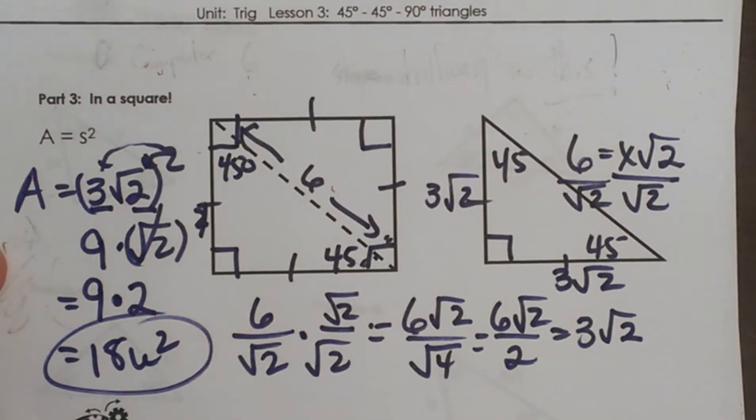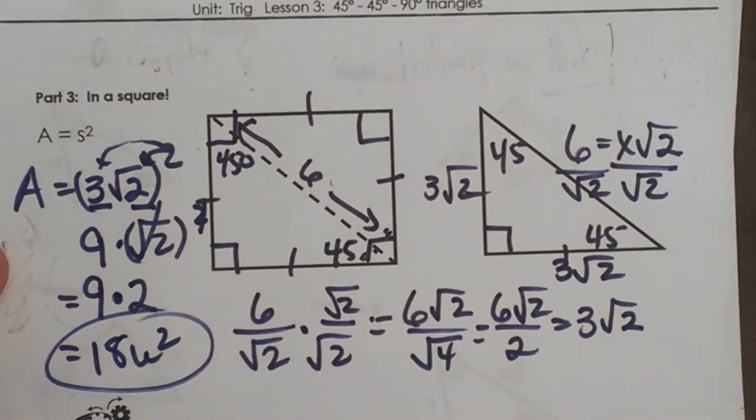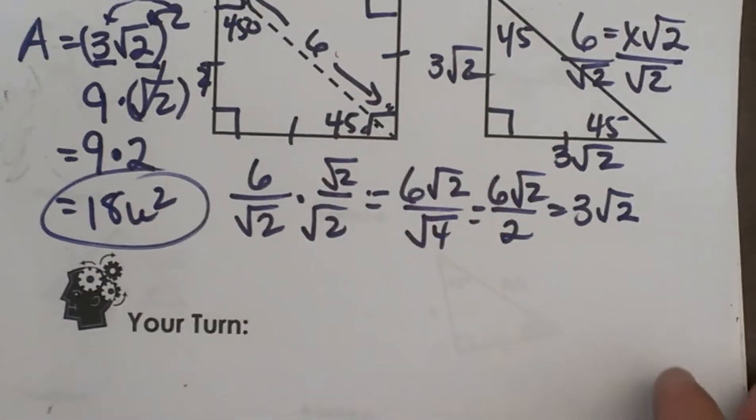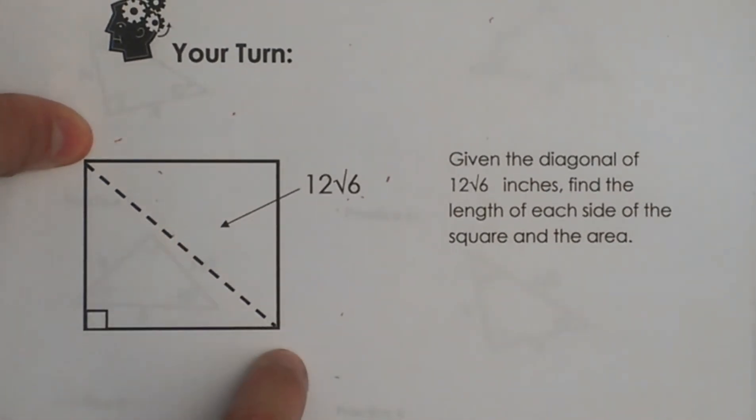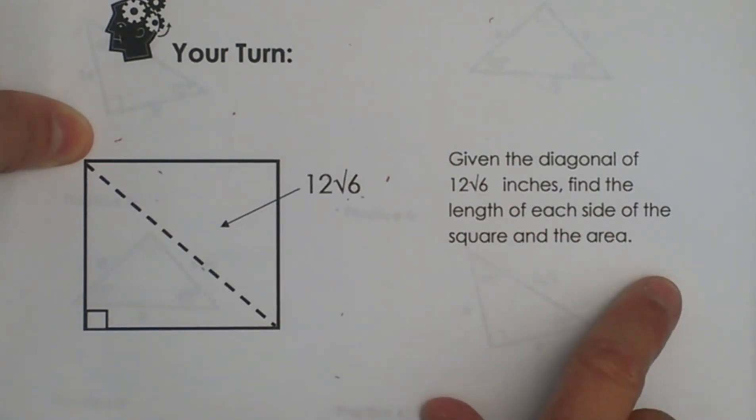And that is how you find the area of a square given the diagonal. You use your 45-45-90 rules. From here you guys have some practice problems. Your turn is starting off with a problem similar to what I just did. You are given the diagonal and you have to figure out the area, the length of each side and the area.